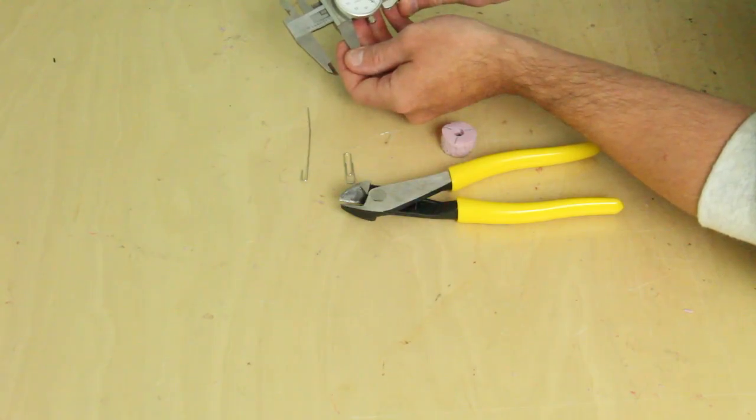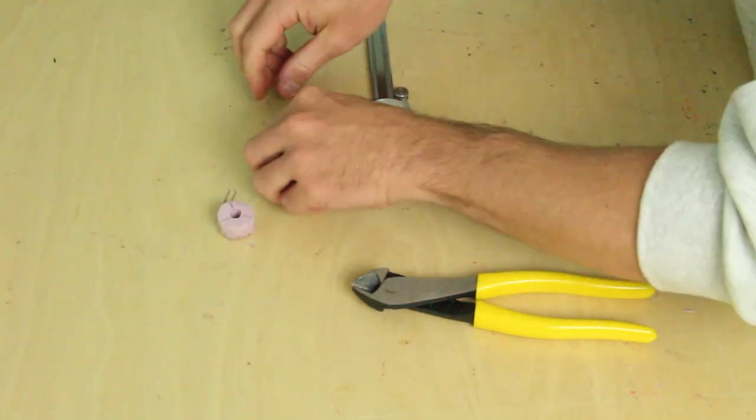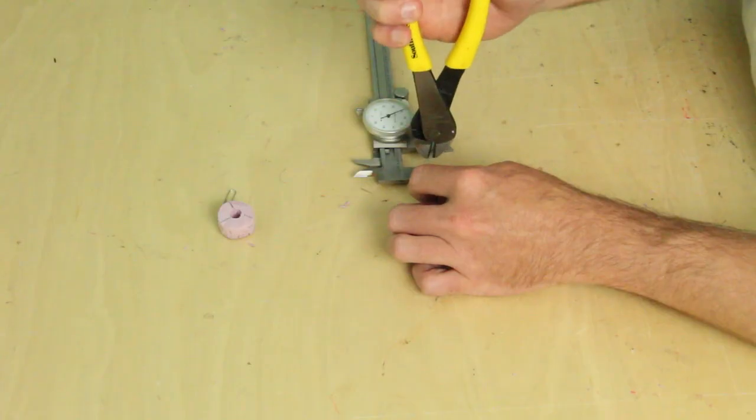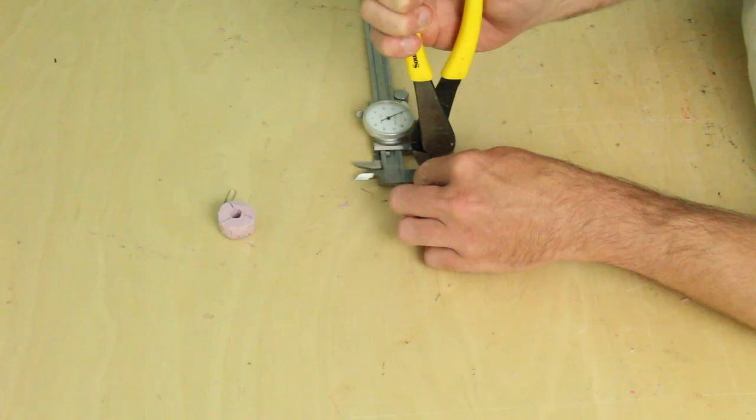Now I'm going to use a caliper to make sure I cut it to the proper length. For 5.8 gigahertz, this is between 0.62 and 0.66 inches, so I'm going to shoot for 0.64 inches. For you metric folks, that's 16 millimeters long.